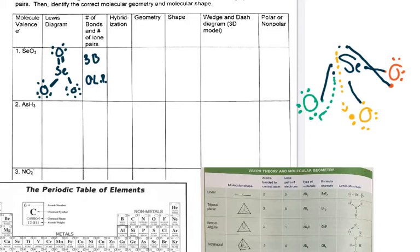Watch the hybridization notes for more details about how to do hybridization. Because there are three things total coming off my central atom — three bonds and zero lone pairs, that's three things total — that's SP², or we write that as SP squared, which is my hybridization.